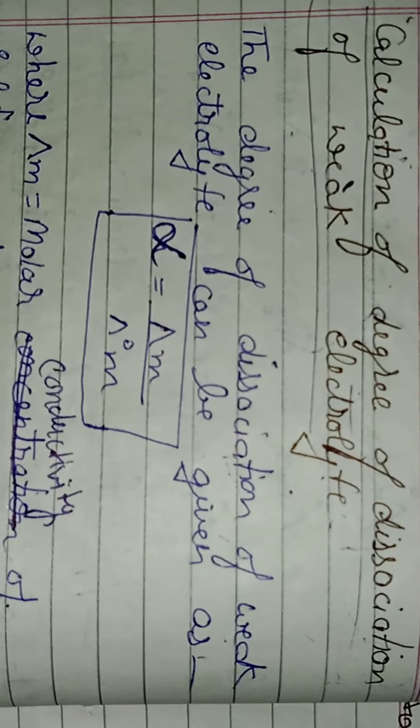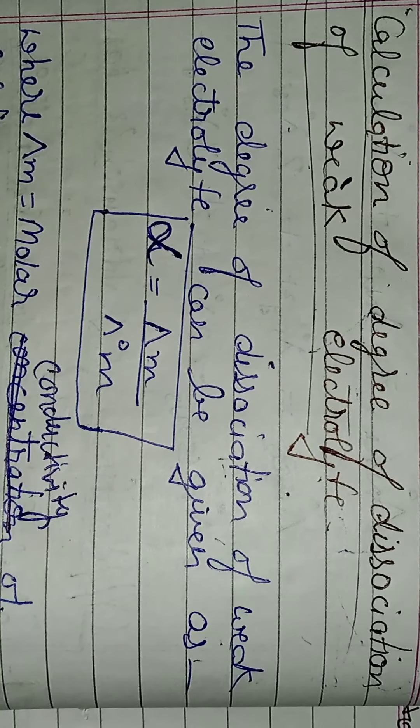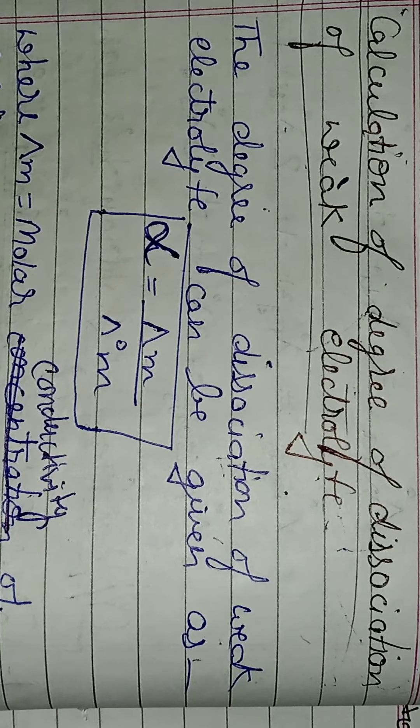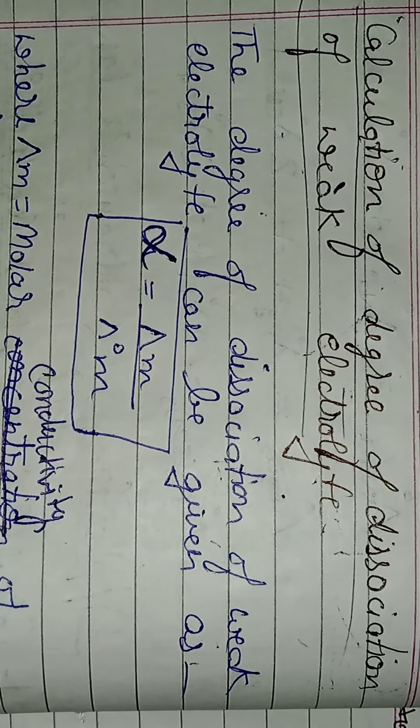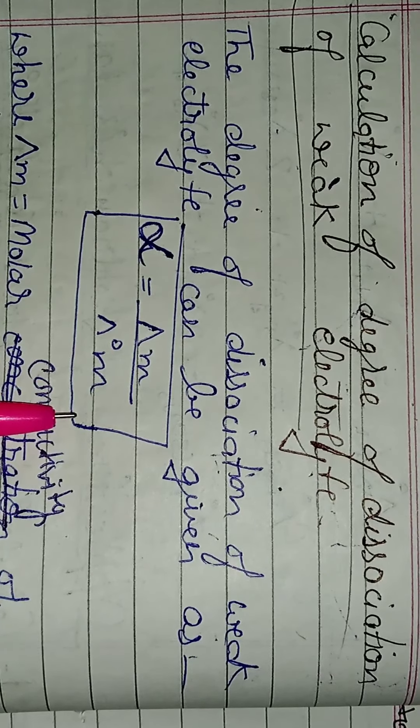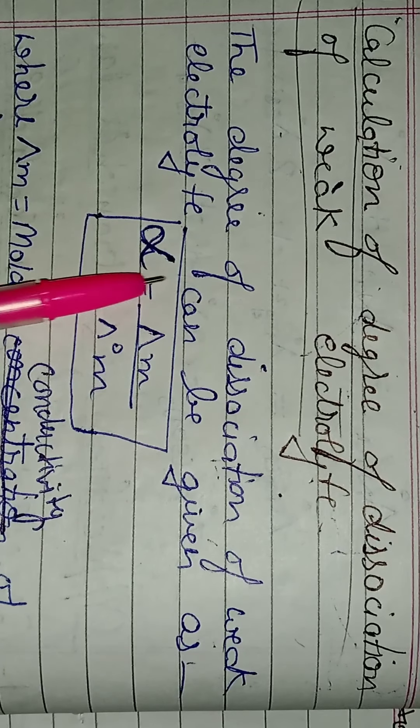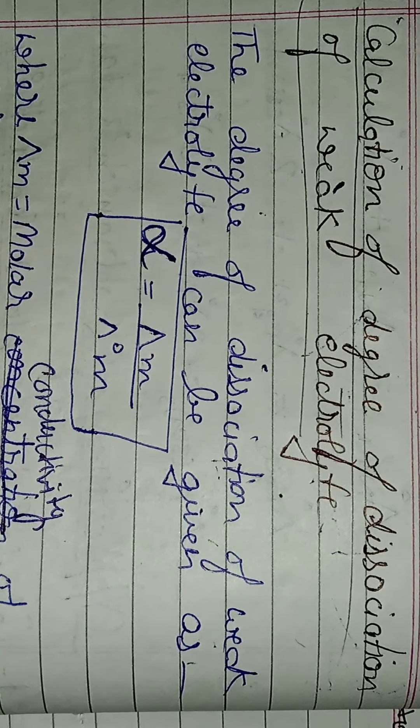Aage, dekhiye, calculation of degree of dissociation of weak electrolyte. The degree of dissociation jo hota hai, weak electrolyte ka, woh alpha hota hai, usko lambda m upon lambda naught m se likhte hai. Ye iska formula hai, degree of dissociation hai weak electrolyte ka.